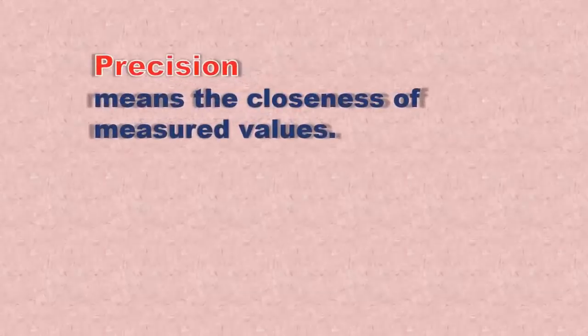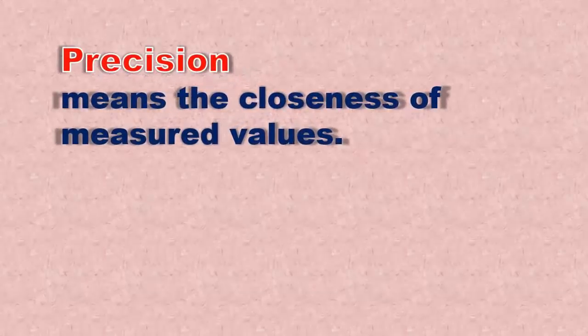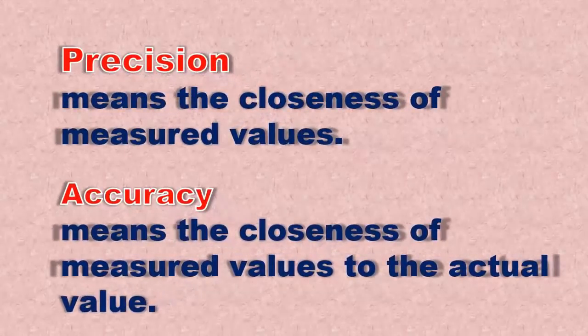Precision means the closeness of measured values to each other. Accuracy means the closeness of measured values to the actual value.